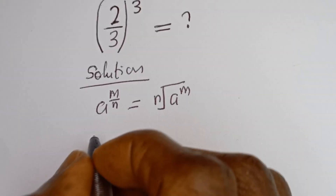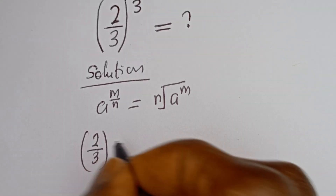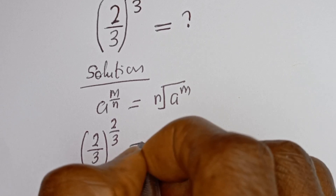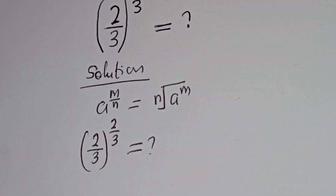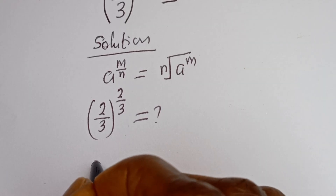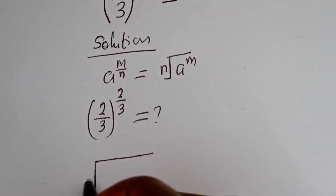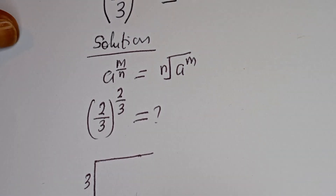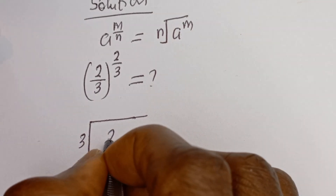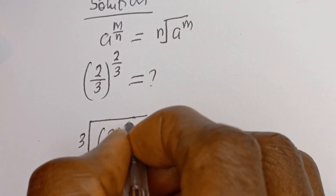Then we have 2 divided by 3, to the power of 2 over 3. And this can be written as the cube root of 2 divided by 3, to the power of 2.